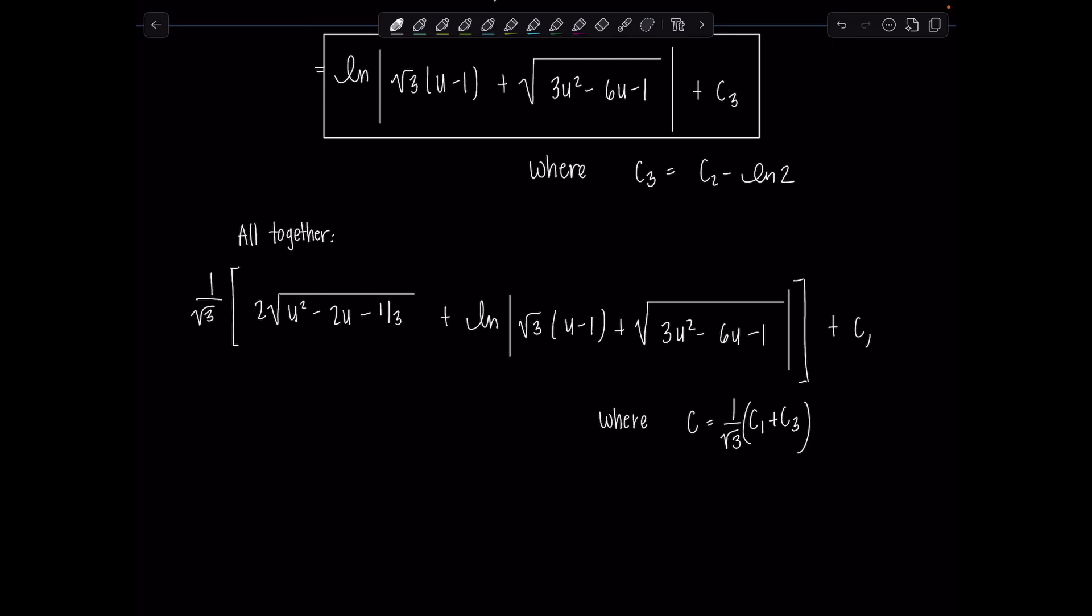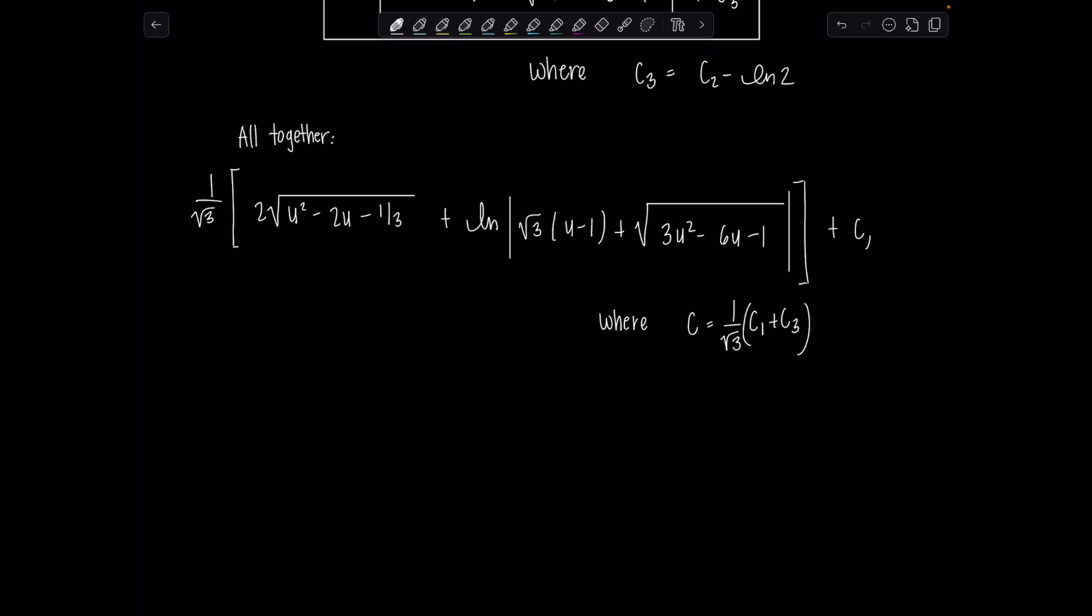And then we can go back to our original variable now. Remember we had originally let u be e to the x. And then I'm also going to distribute the 1 over rad 3. So we've got 2 over rad 3 times the square root u squared would be e to the 2x minus 2e to the x minus one third plus 1 over rad 3, natural log absolute value rad 3 times e to the x minus 1 plus radical 3e to the 2x minus 6e to the x minus 1 plus c.